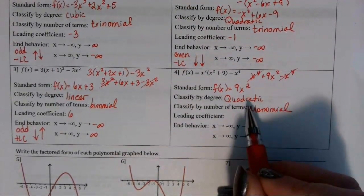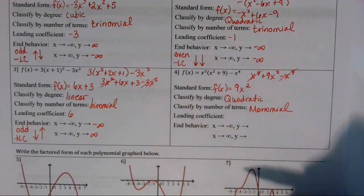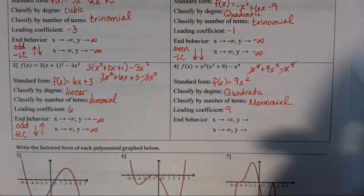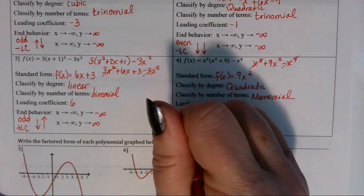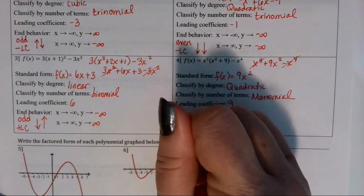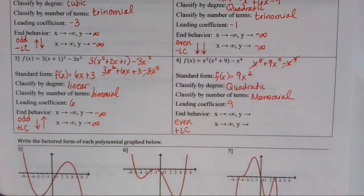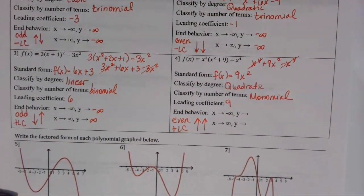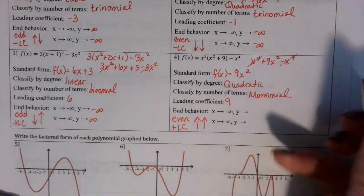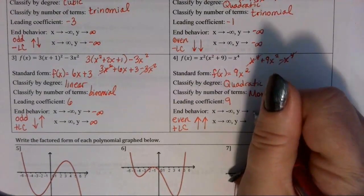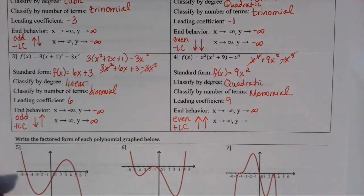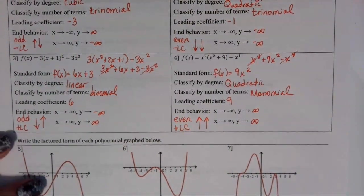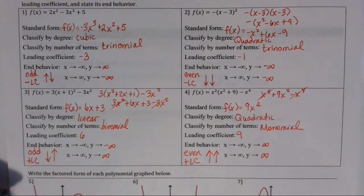Since the degree is 2 and there is one term, it is a quadratic monomial. The leading coefficient is 9, and since the degree is even with a positive leading coefficient, we know that both ends head up. So as x approaches negative infinity, y is going up to positive infinity, and as x approaches positive infinity, y is headed up to positive infinity.